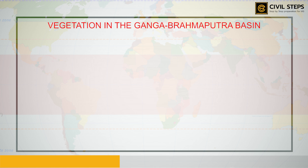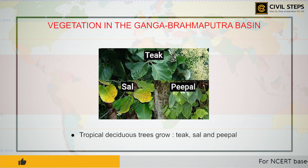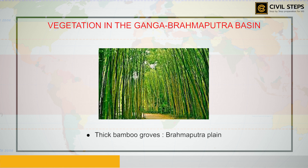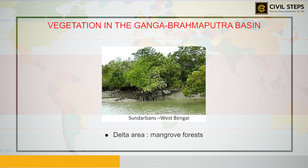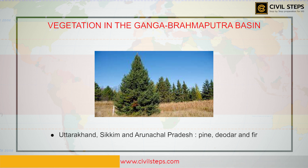The vegetation cover of the Ganga-Brahmaputra basin varies according to landforms. In the Ganga and Brahmaputra plains, tropical deciduous trees grow along with teak, sal, and peepal. Thick bamboo groves are common in the Brahmaputra plain. The delta area is covered with mangrove forests. In parts of Uttarakhand, Sikkim, and Arunachal Pradesh, coniferous trees like pine, deodar, and fir are found due to the cool climate and steep slopes.